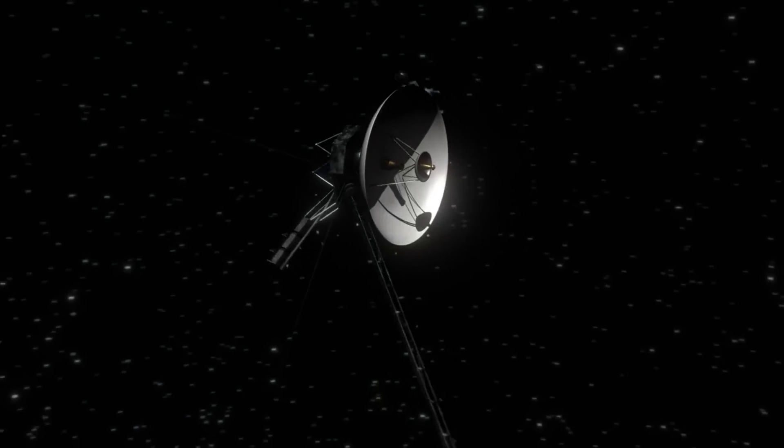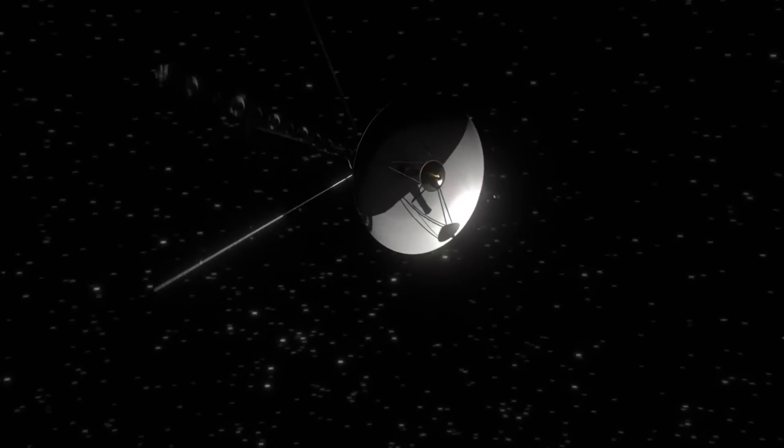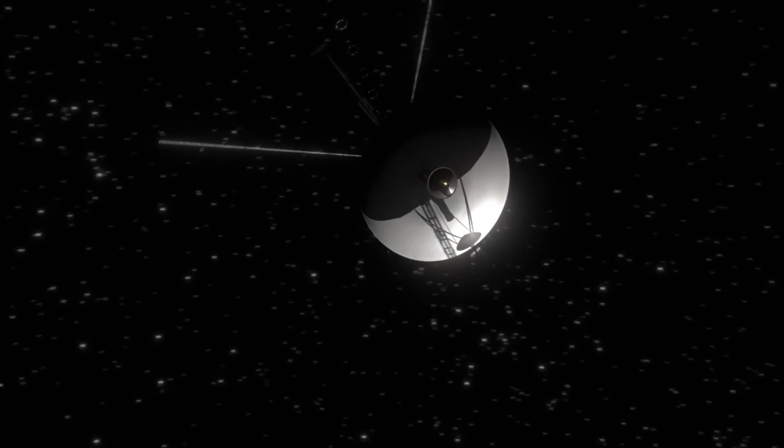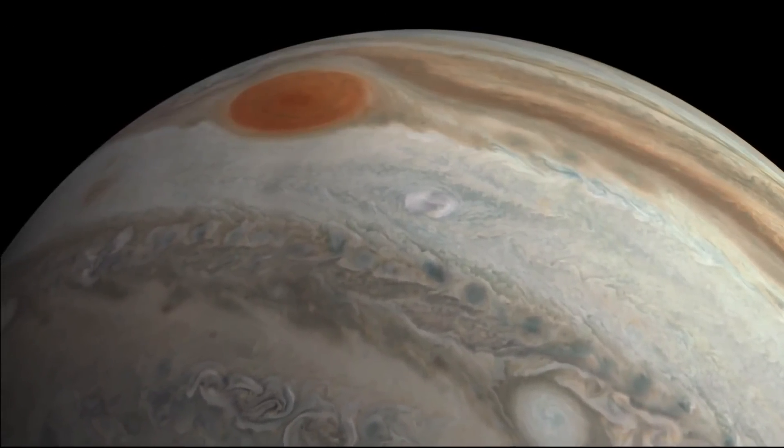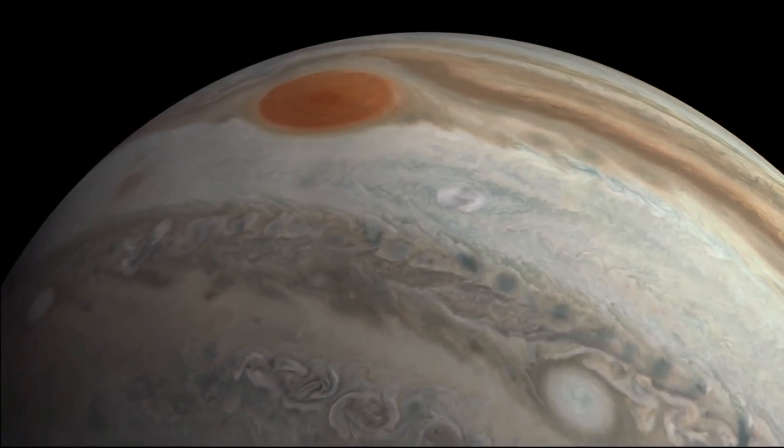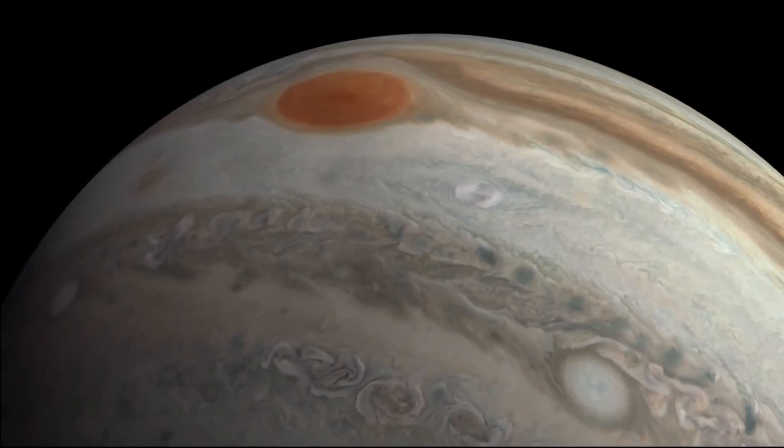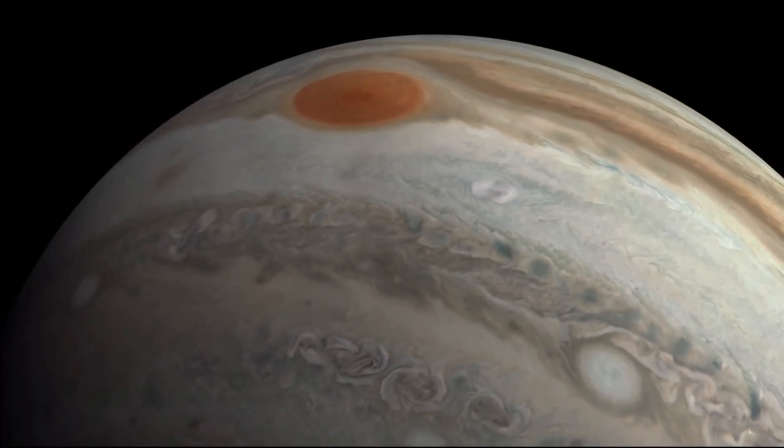As Voyager 1 journeyed through space, it sent back images and data that transformed our understanding of the solar system. The spacecraft's flyby of Jupiter in 1979 revealed the planet's complex weather systems, including the Great Red Spot, a massive storm larger than Earth that has been raging for centuries.